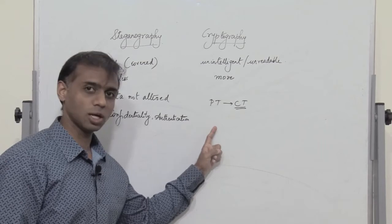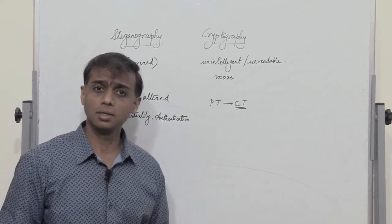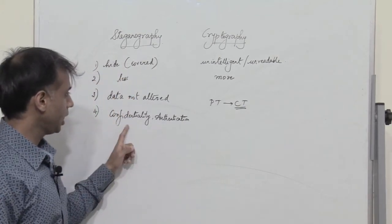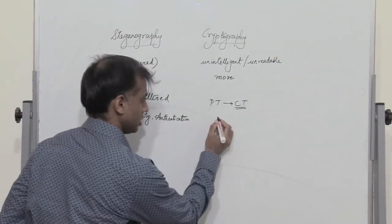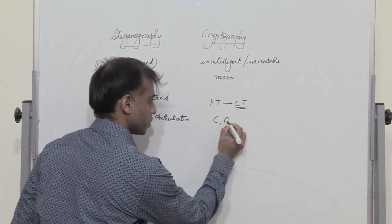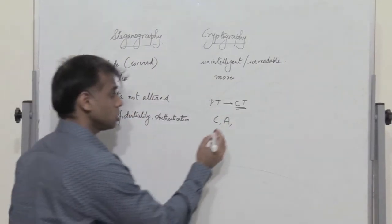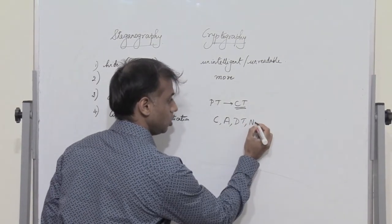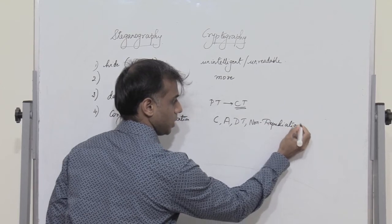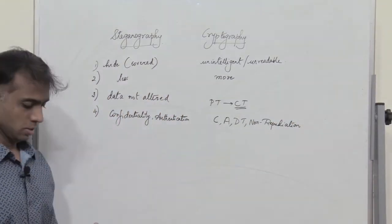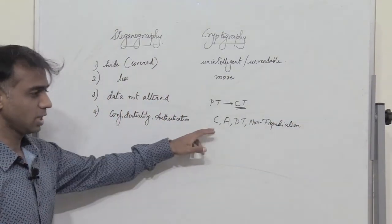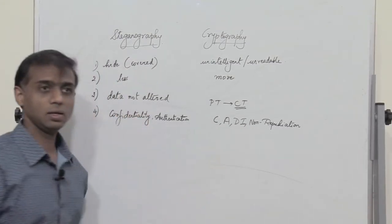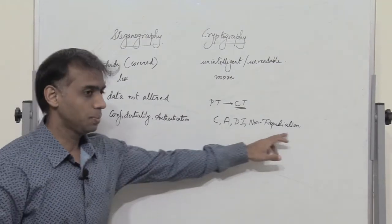In cryptography there are four basic essential requirements when a cipher is developed: it should provide confidentiality, it should provide authentication, it should also provide data integrity, and it should provide non-repudiation. So both the source as well as the destination must satisfy these four requirements.